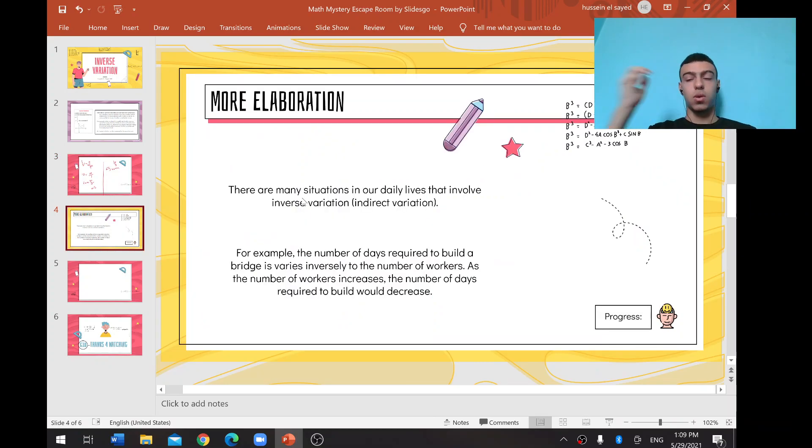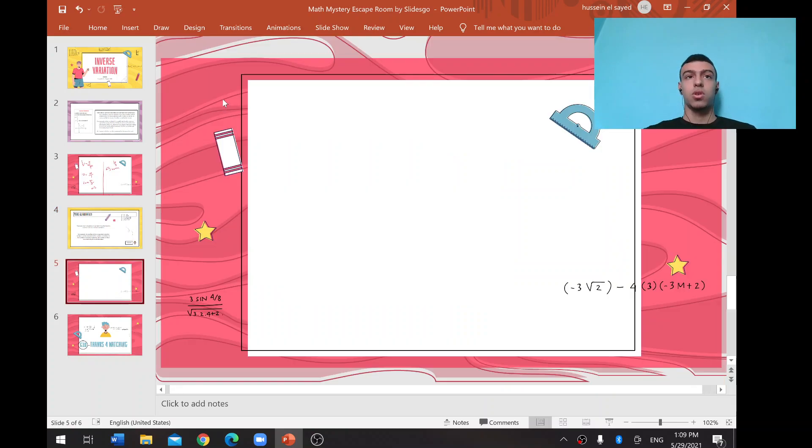There are many situations in our daily lives that involve inverse variation. For example, the number of days required to build a bridge varies inversely with the number of workers. If 30 workers take 5 hours to finish the bridge, how much will it take 20 workers to finish the bridge?